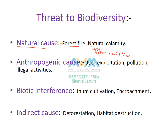The second threat is anthropogenic causes — that is, man-made activities responsible for the destruction of biodiversity. These include overexploitation, where humans exploit natural resources in an excessive and unsustainable way; pollution; and illegal activities like hunting and poaching of animals in order to sell their useful body parts, such as the teeth of elephants or the horn of the one-horned rhinoceros.